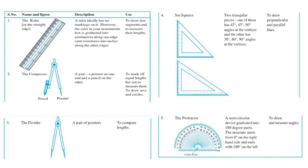The next thing that we are going to learn is about compass. It includes a pointer and a pencil. It is used to mark equal lengths but not to measure them, and is also used to draw arcs and circles.